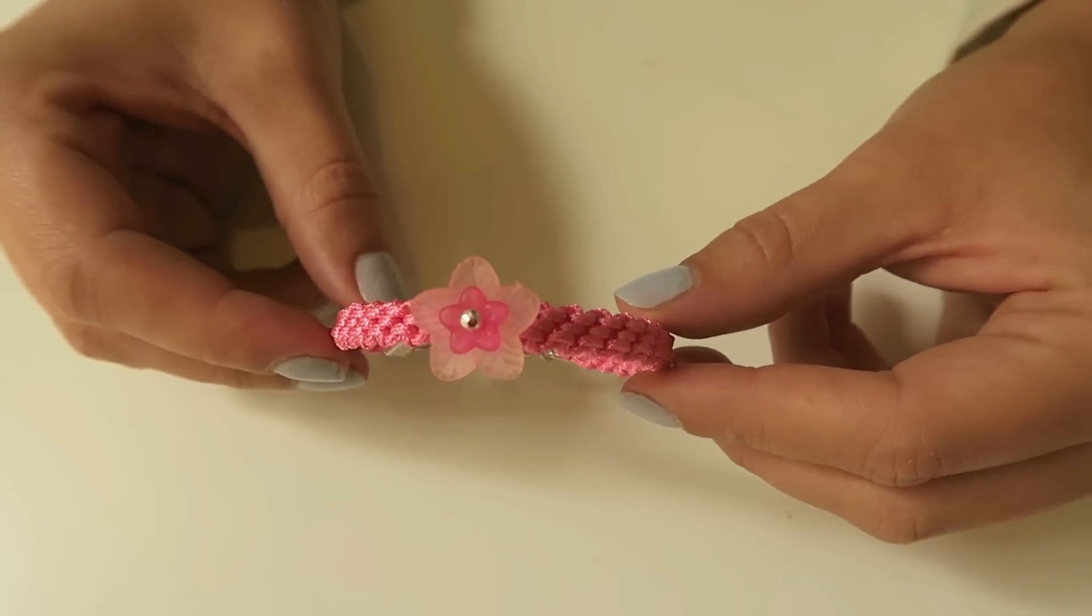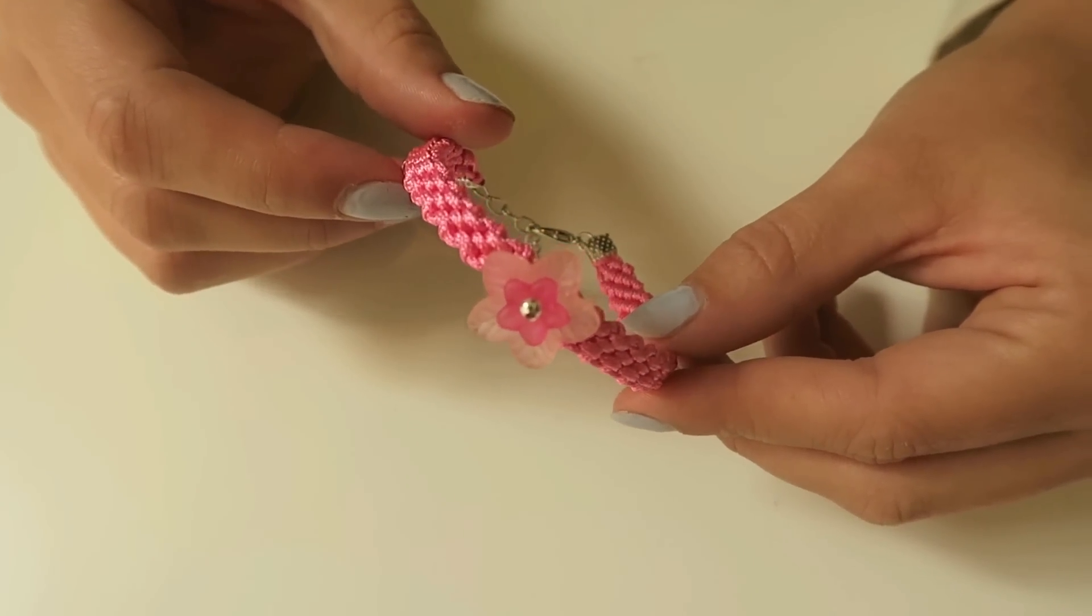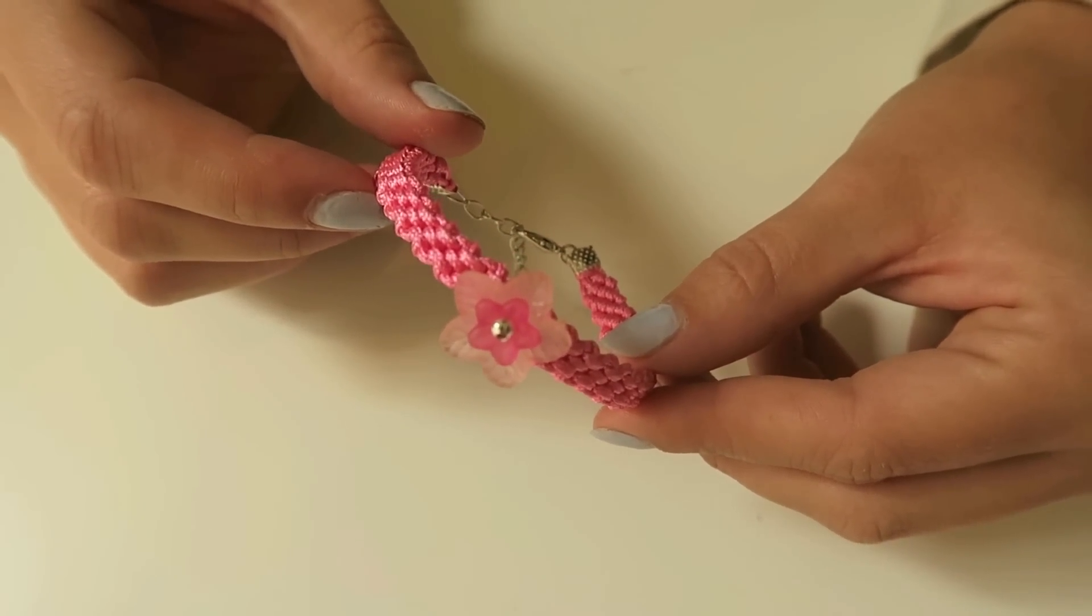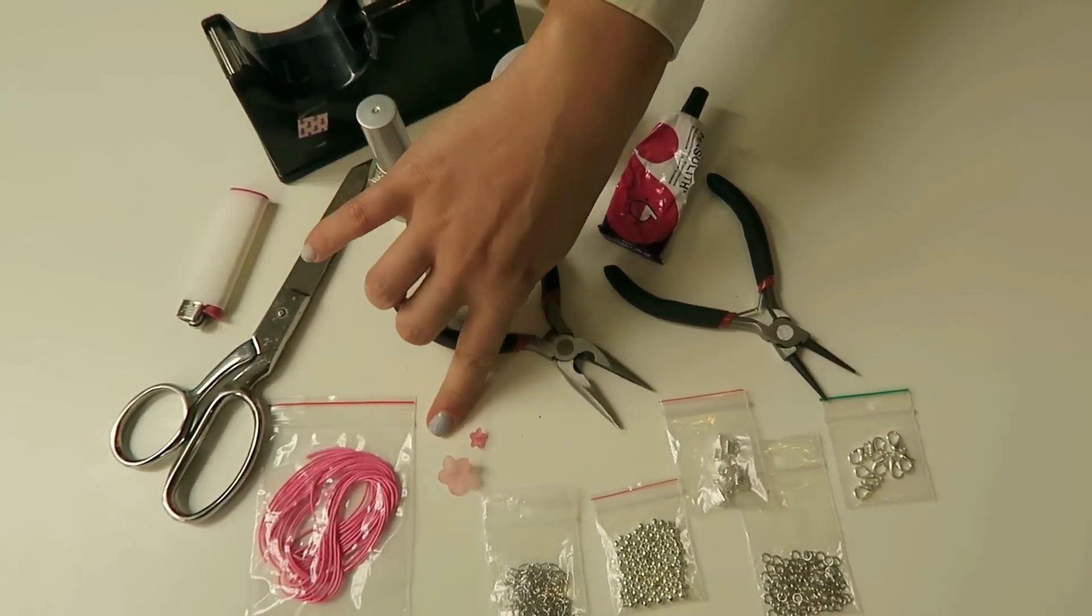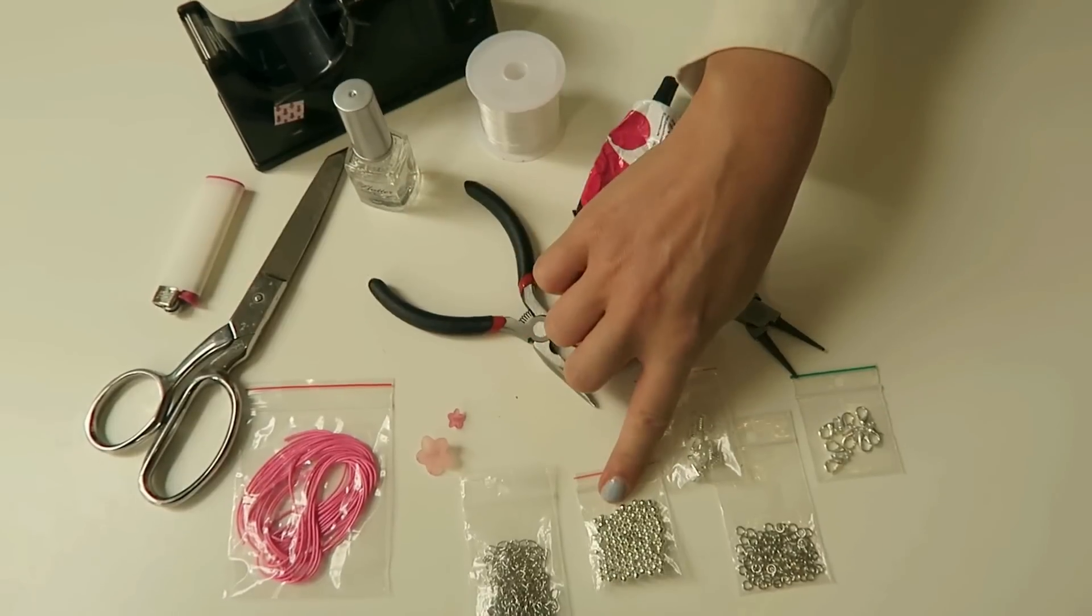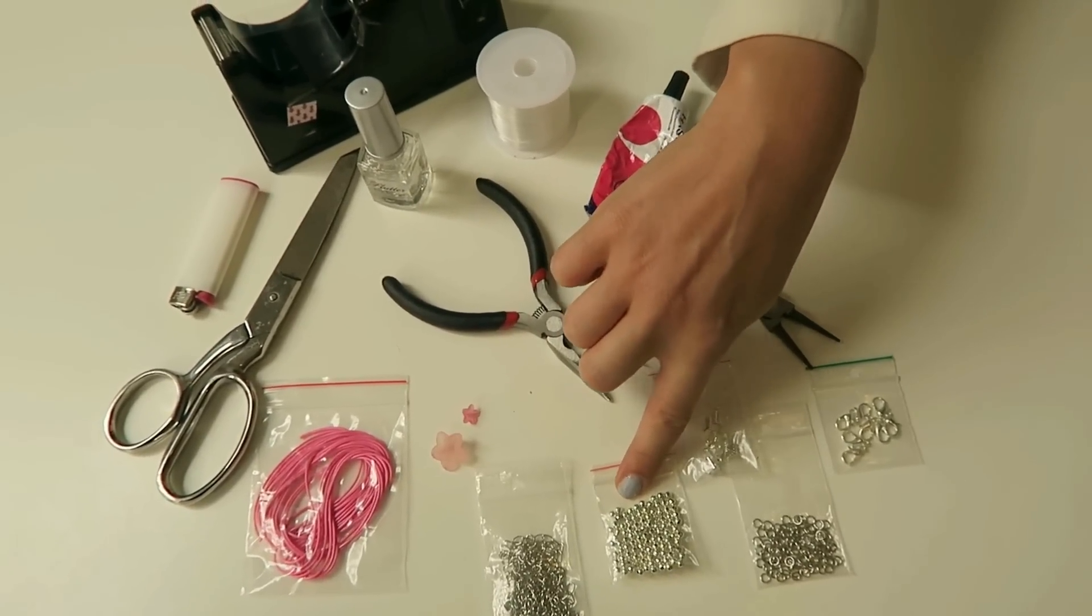It's a very basic knot and we're just gonna fancy it up with our new flower beads. So I'll show you what you need. You're gonna need some waxed cord and flower beads and 3mm spacer beads.